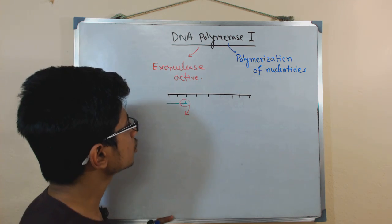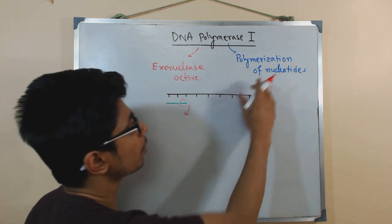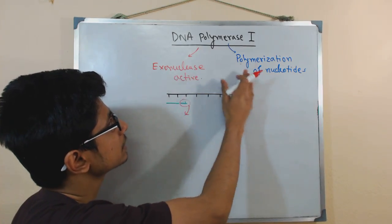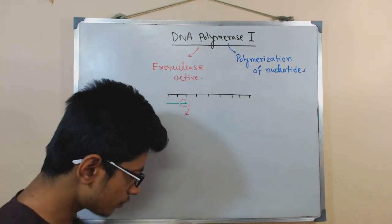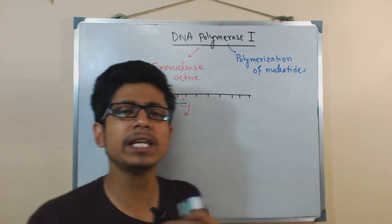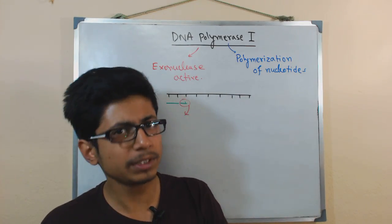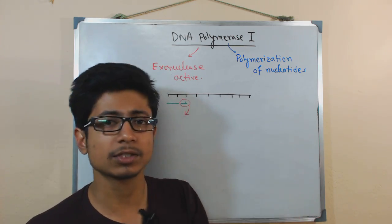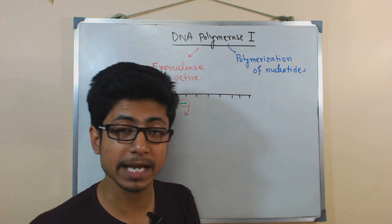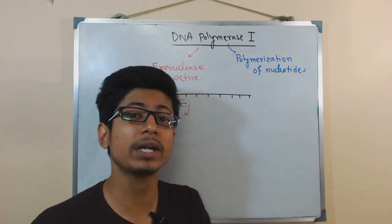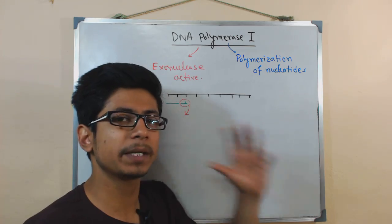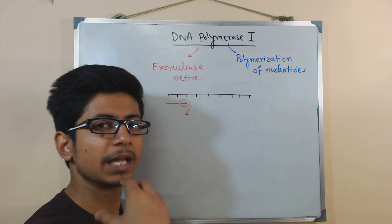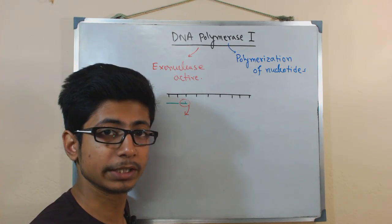That is why both activities — polymerization as well as exonuclease activity — are required, and both are carried out by DNA Polymerase I. During the time DNA Polymerase I was discovered, scientists believed it was the only polymerization enzyme for E. coli. I remind you, whatever experiments were conducted were for E. coli.